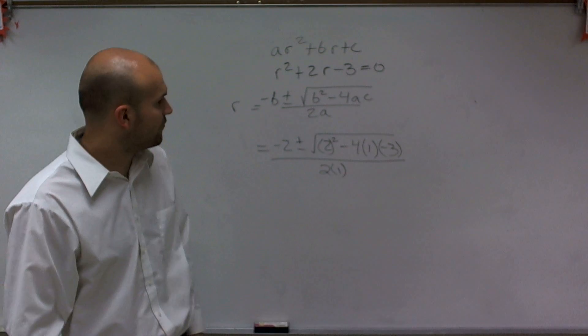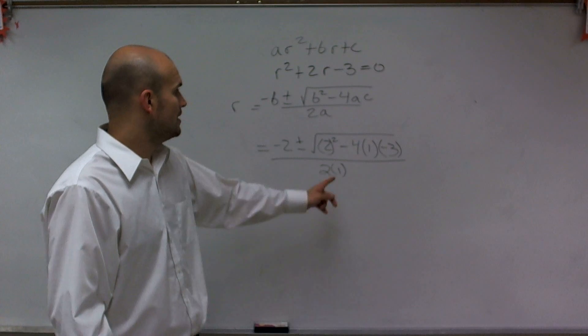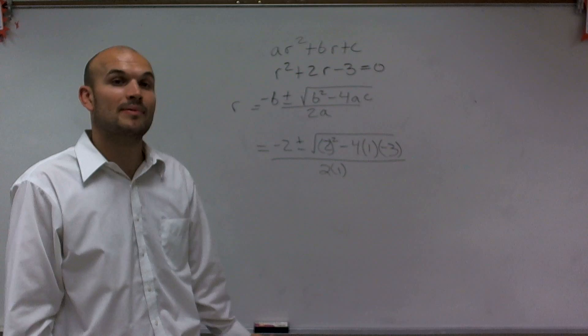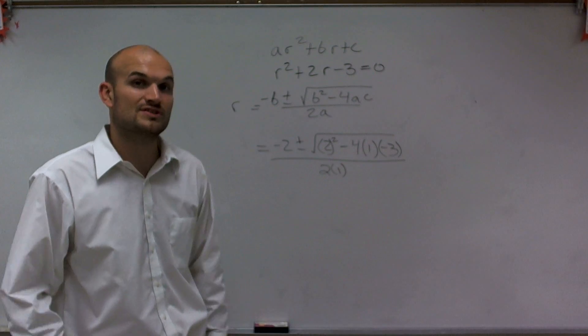So when I get this, I get 4, or 2 squared, which is 4, minus, and then I do negative, I can do negative 3 times negative 4, which is going to be a positive 12. So I have 4 plus 12, which is 16.